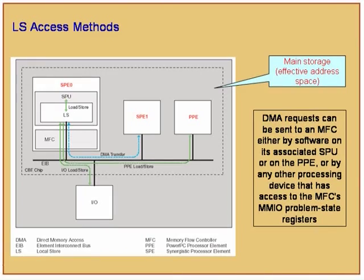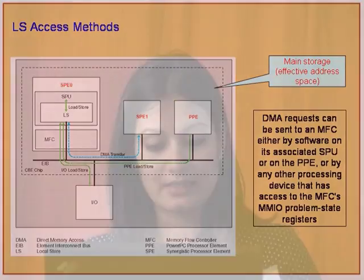Another diagram shows the access methods. The blue lines indicate the DMA transfer paths between the SPE to another SPE or to a PPE, and access channels between the SPU and the local store, which is a 16-byte load and store. From the local store, basically an SPE can also talk to any memory-mapped I/O devices.